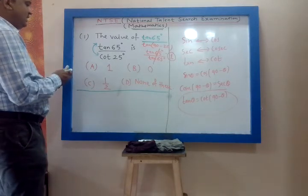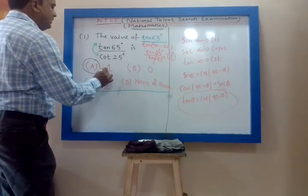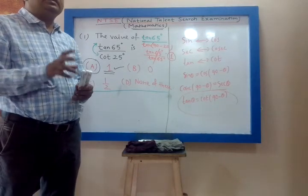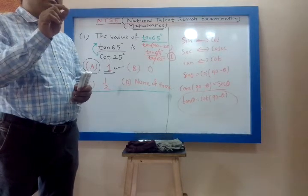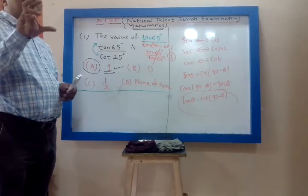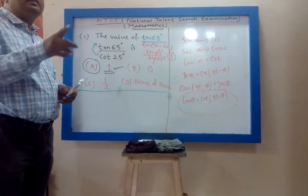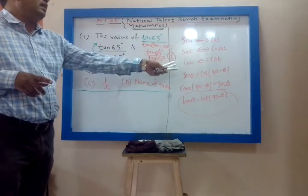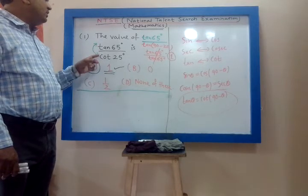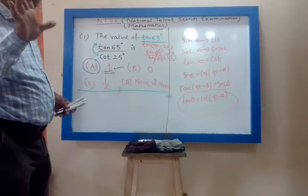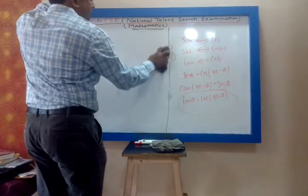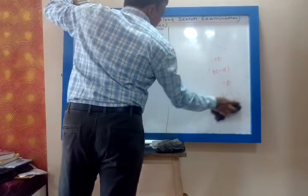The correct answer is A — 1. In the NTSE examination, for each mathematics question you will be given 4 options and you have to click the correct answer. In this question we used the concept of complementary angle: when you have tan and cot, one you fix, the other you change.